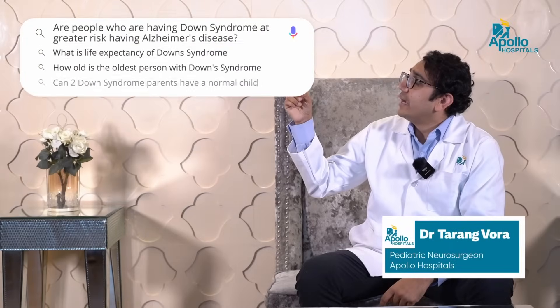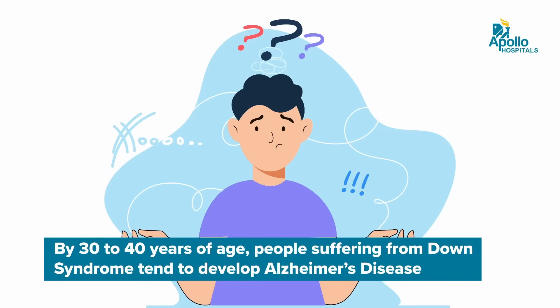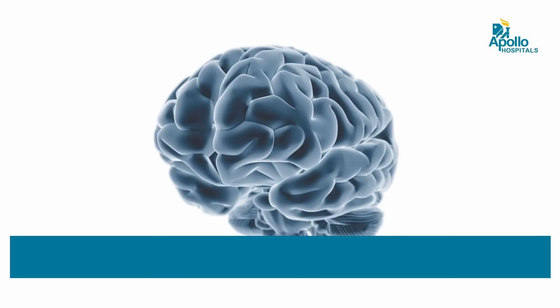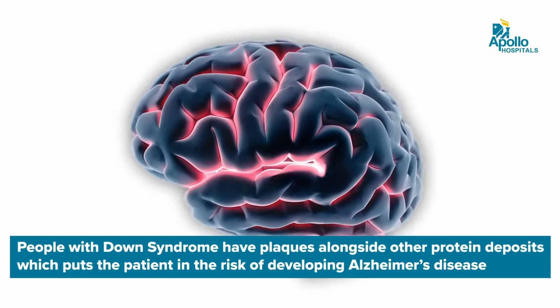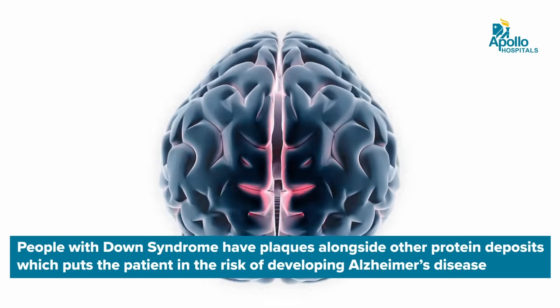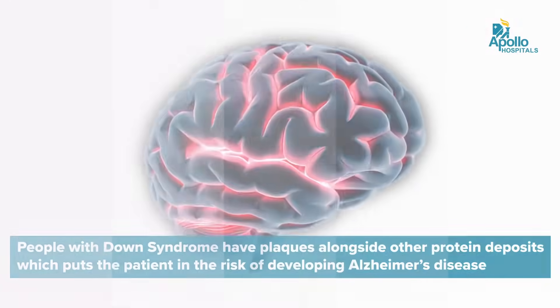Are people with Down syndrome at greater risk of having Alzheimer's disease? Yes. It has been observed that people with Down syndrome develop Alzheimer's disease by around 30 to 40 years of age. This is because a particular type of protein which is deposited in the brain in patients with Alzheimer's disease is manufactured more in patients with Down syndrome.